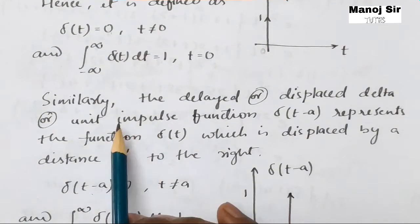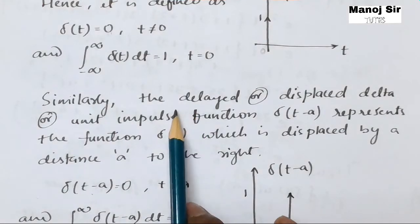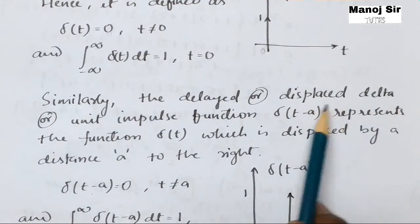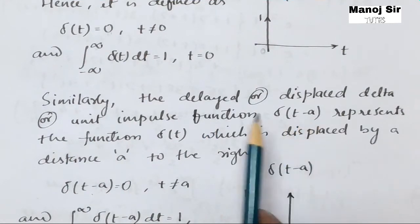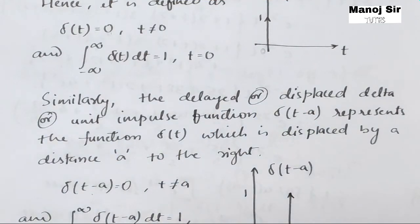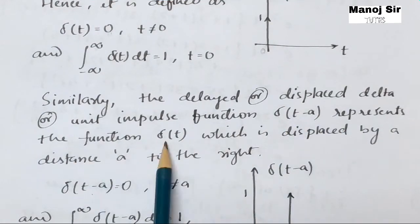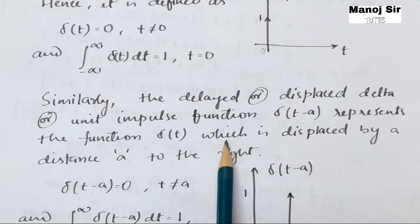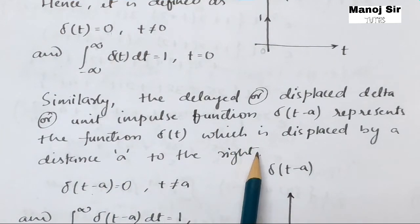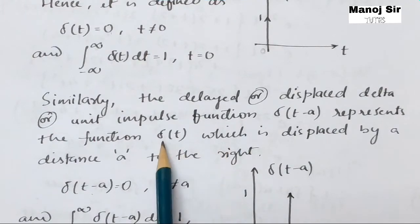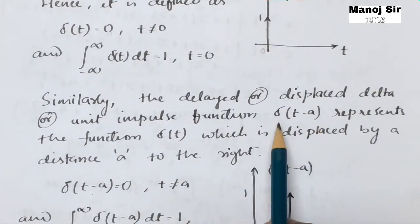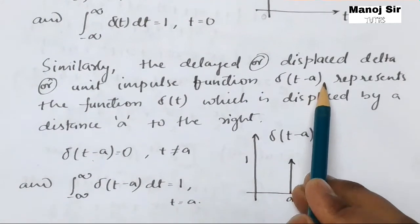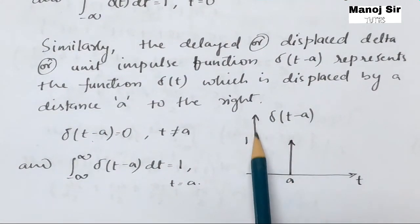Now coming to the second part — the delayed or displaced unit impulse function. On similar grounds we can say the delayed or displaced delta function, that is delta(t minus a), represents the same function delta(t) but displaced by a distance a to the right. When delta(t) is displaced by a distance a to the right, it is represented as delta(t minus a).